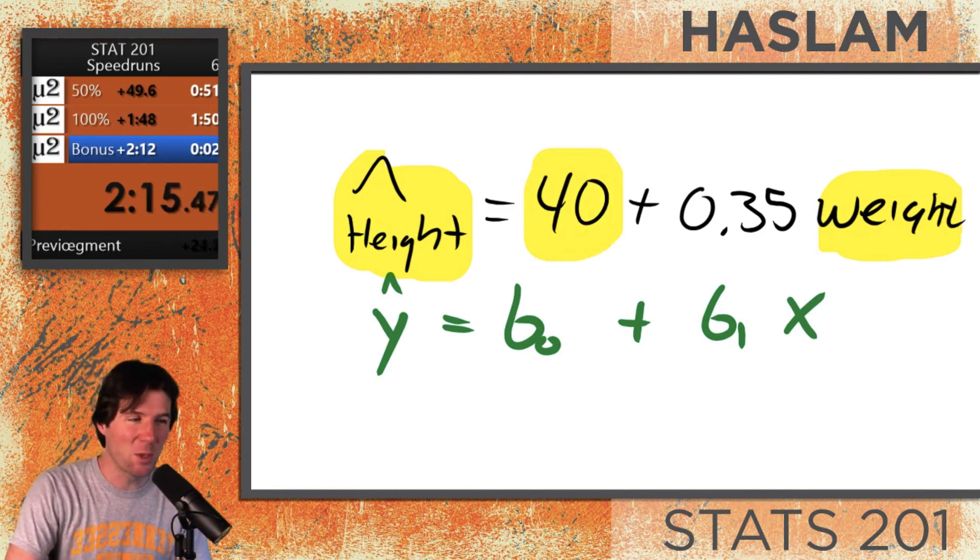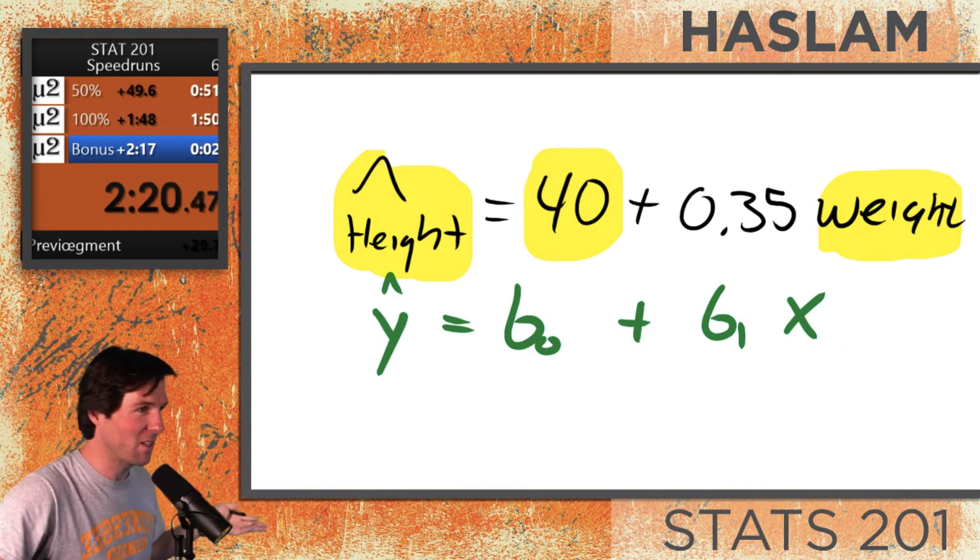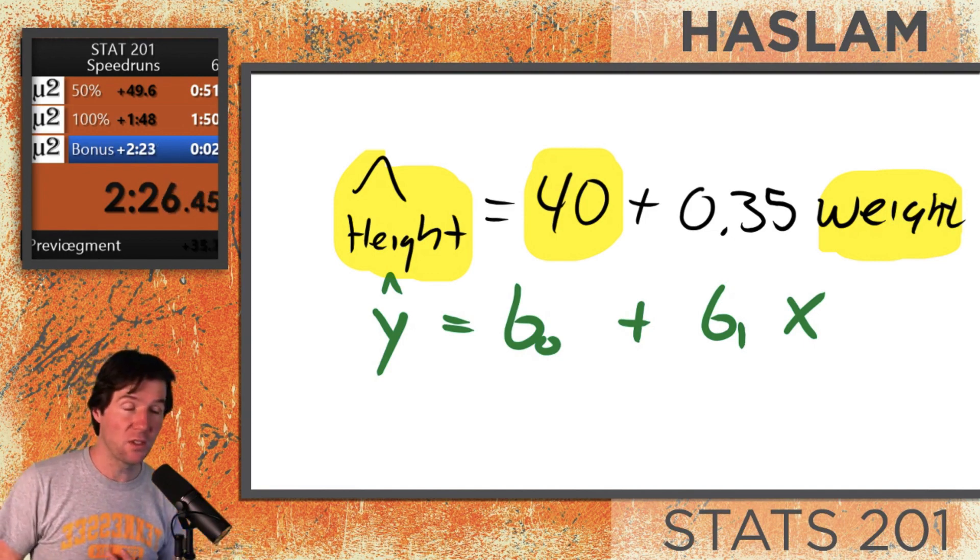Now think about that. Can someone have a weight of 0? And let's say that happened. If someone had a weight of 0, they would take up no space, and then they couldn't have a height of 40 inches. So when someone has a weight of 0, we would predict that their height would be 40 inches. That works for interpretation too, but that's illogical.